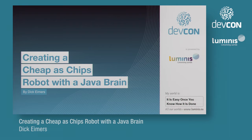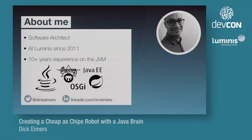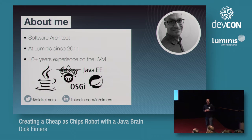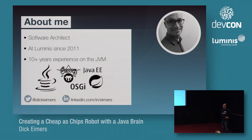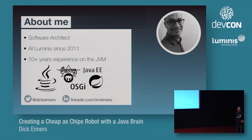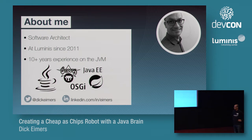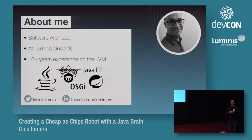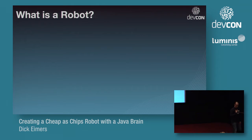Hello and welcome to my talk about creating a robot with a Java brain. My name is Dick Heimers. I work at Luminis since 2011, almost five years now, but I have over 10 years of experience on the JVM. I started out as a J2EE programmer, moved to Spring, had my share of OSGi, got sidetracked by Groovy and Grails, and recently picked up Spring Boot again. If you want to contact me, I'm available on Twitter and LinkedIn.